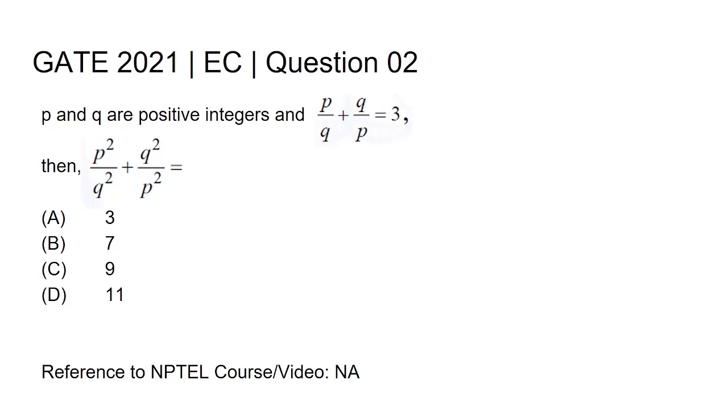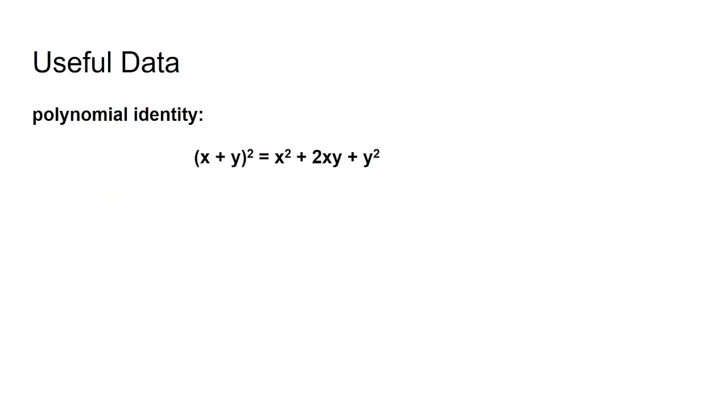The options are: (A) 3, (B) 7, (C) 9, (D) 11. To solve this question, the polynomial identity equation is very important, so first I will briefly discuss this formula.